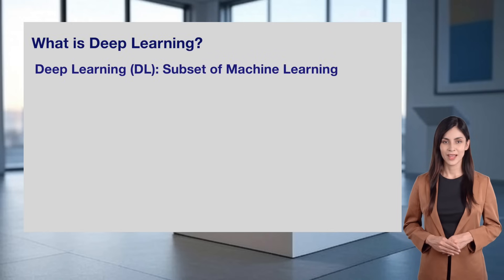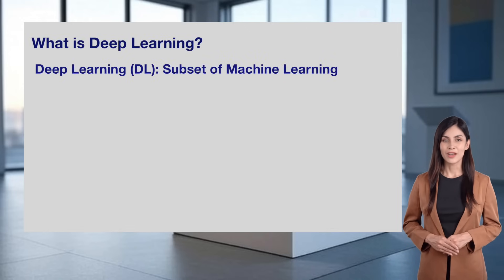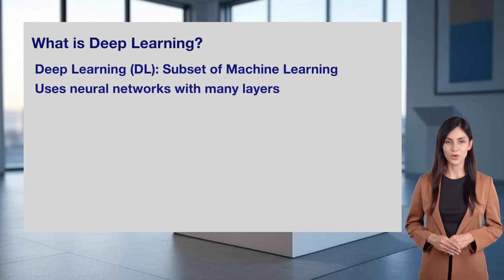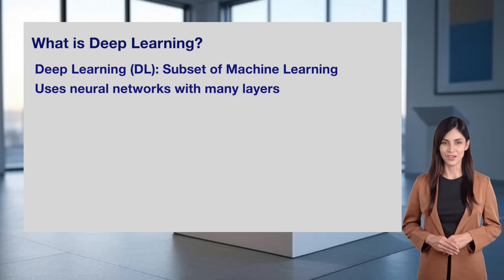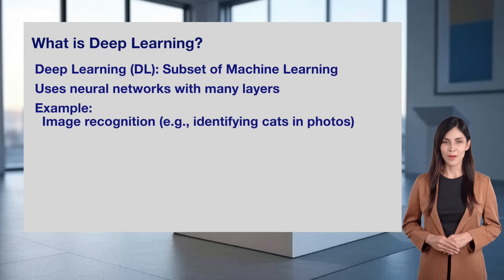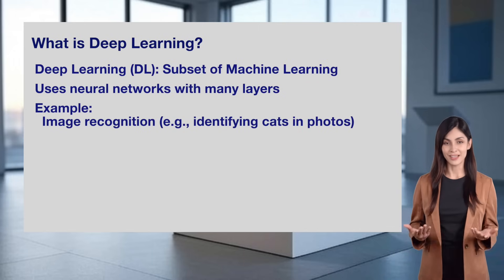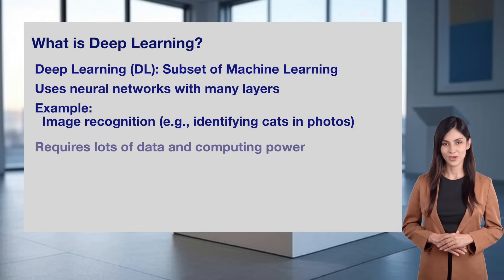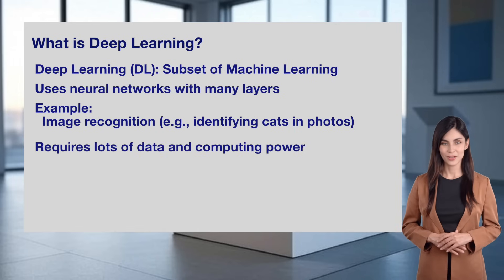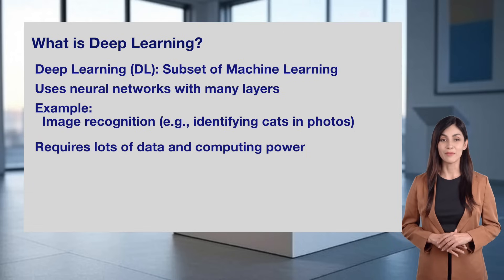Next, we have deep learning, or DL, which is a subset of machine learning. Deep learning uses neural networks — structures inspired by the human brain — with many layers to process data. For example, deep learning powers image recognition, like identifying cats in photos. It's incredibly powerful, but requires lots of data and computing power to work well. Deep learning is behind many advanced AI applications today, taking machine learning to the next level.